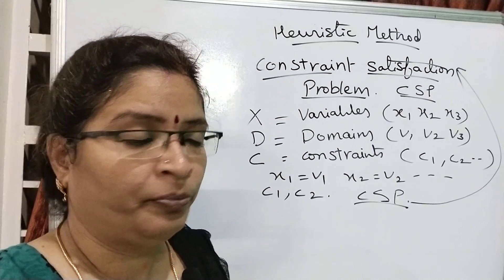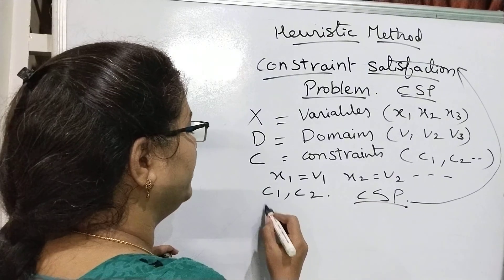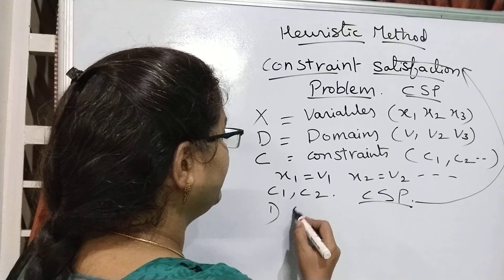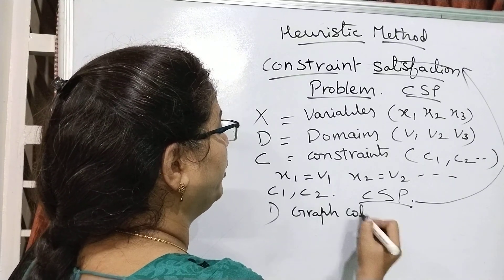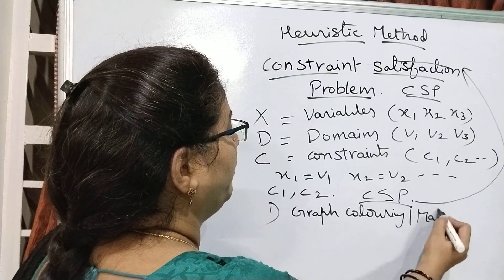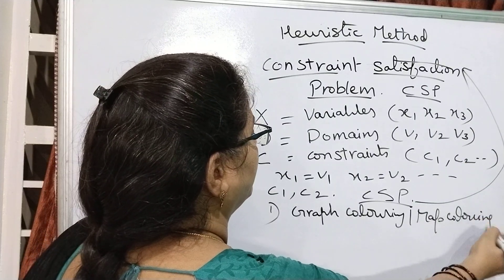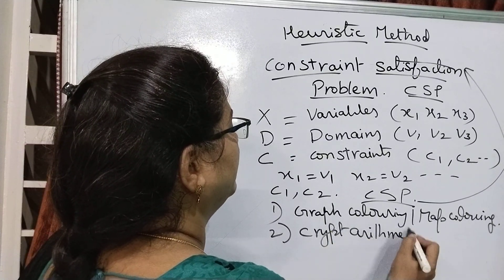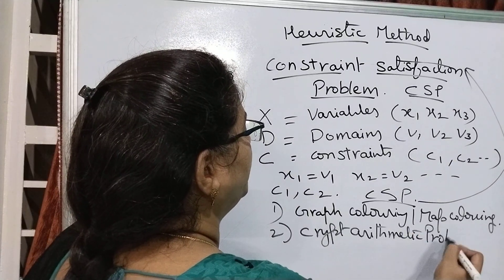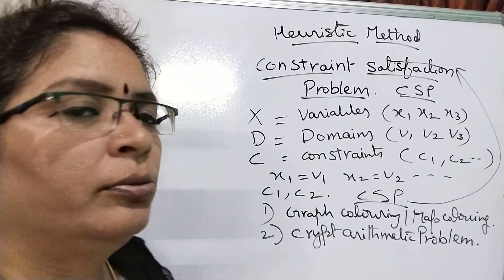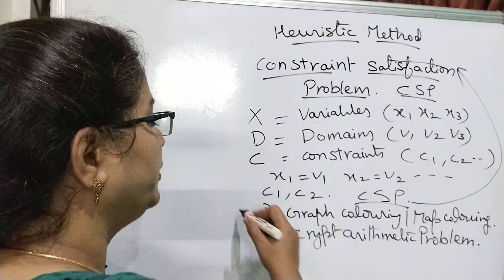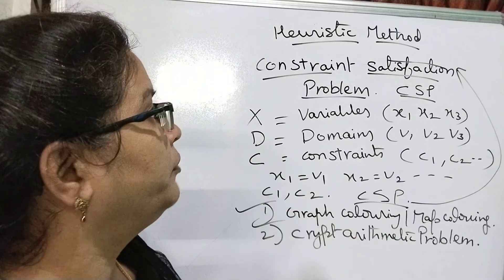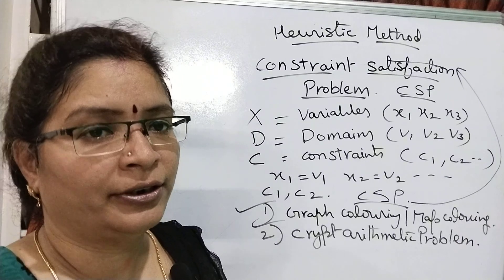How can we solve this kind of problem? What examples are we going to see? The very good first example of the Constraint Satisfaction Problem is graph coloring or map coloring. The second example is the crypt arithmetic problem, also one of the most widely used. We will discuss these two problems of CSP, which is one of the most widely used heuristic techniques.